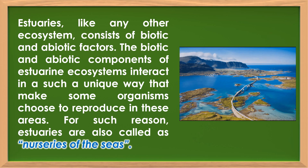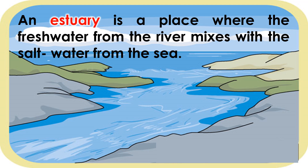Estuaries, like any other ecosystem, consist of biotic and abiotic factors. The biotic and abiotic components of estuarine ecosystems interact in such a unique way that makes some organisms choose to reproduce in these areas. For such reason, estuaries are also called the nurseries of the seas. An estuary is a place where the fresh water from the river mixes with the salt water from the sea.